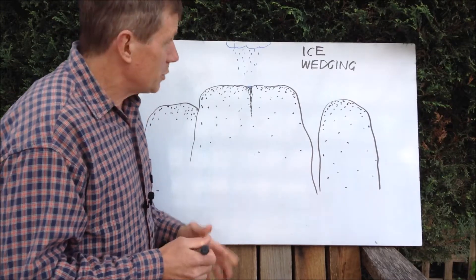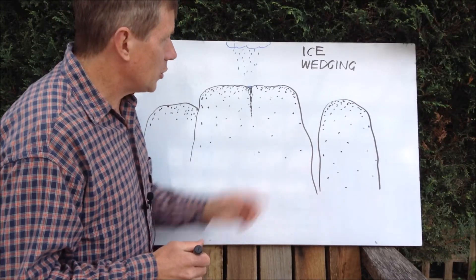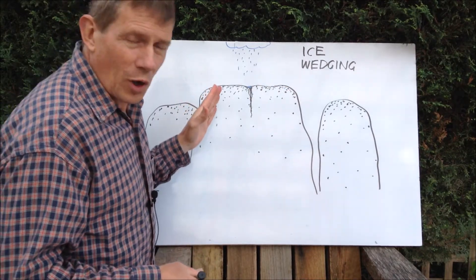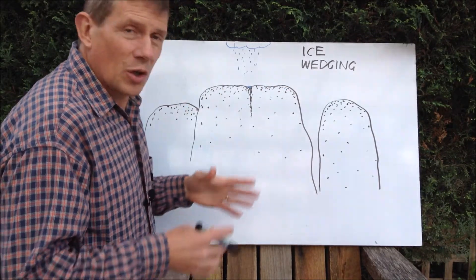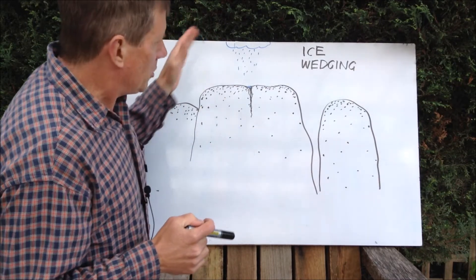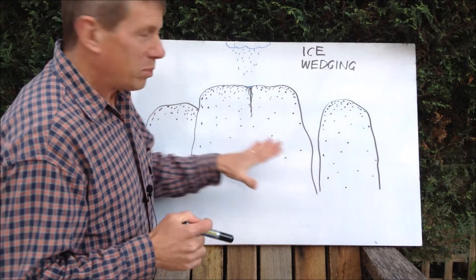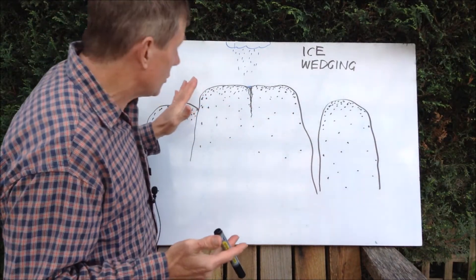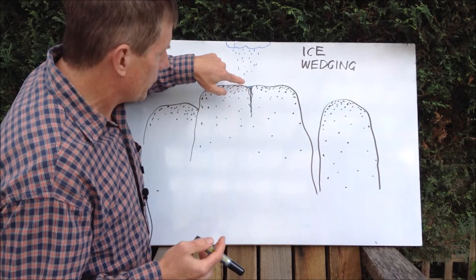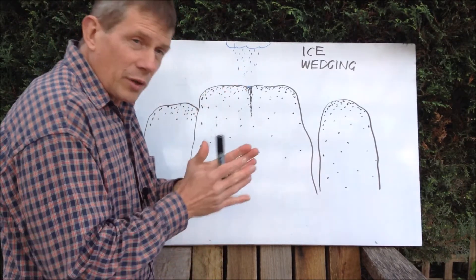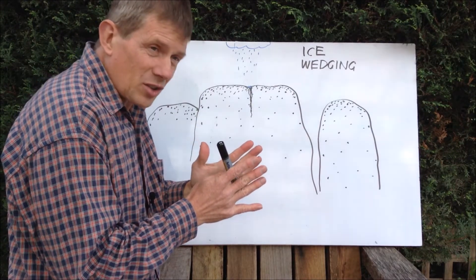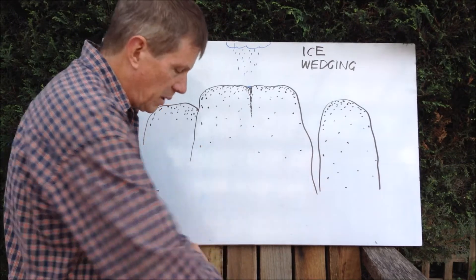I'll use this whiteboard to explain a little bit about this thing called ice wedging. Ice wedging happens in rocks because water expands when it freezes. You might think of a big rocky outcrop like this, say up on the top of a mountain, but when it rains, water might settle inside a crack. And that water, when it freezes, expands just a little bit, and it's got such strength and force it can push those rocks apart.